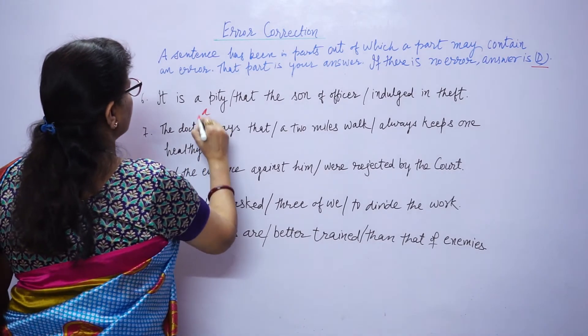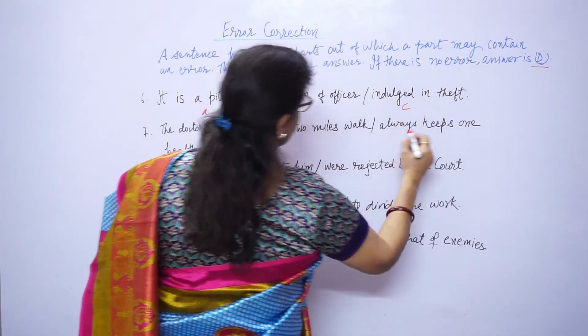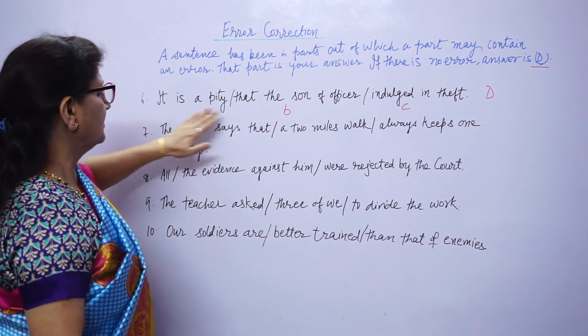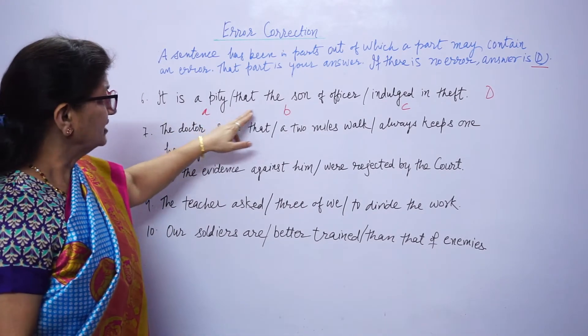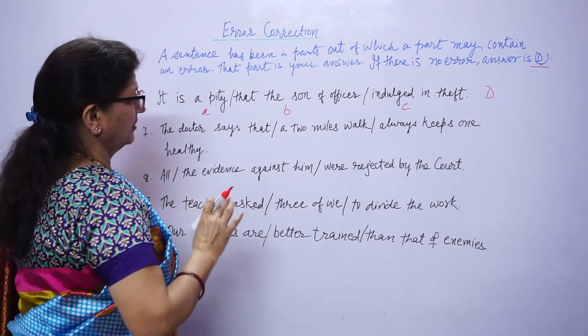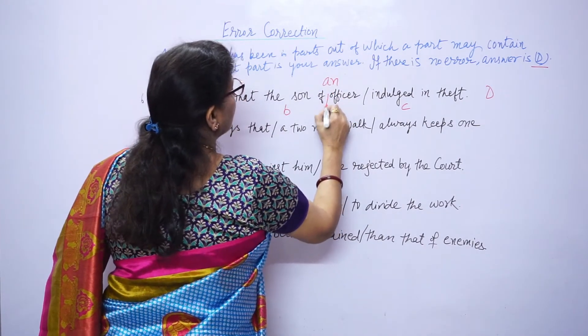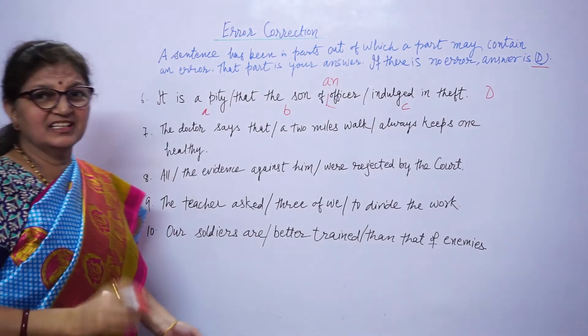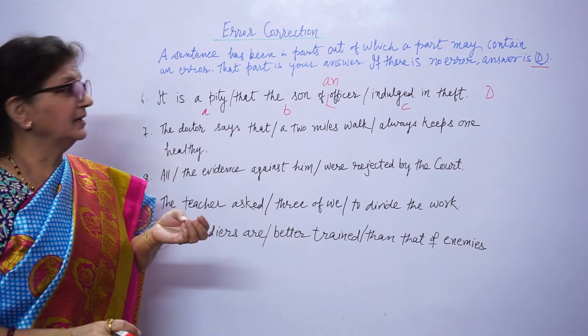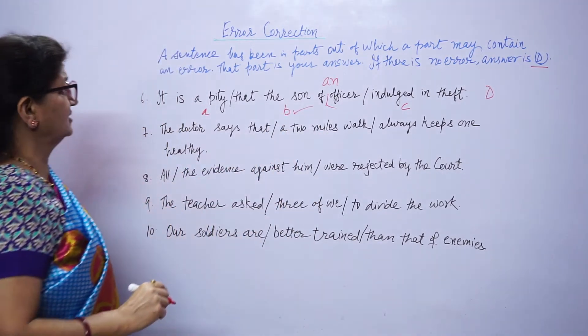Our next sentence is, it's a pity that the son of officer indulge in theft. It's a pity, correct. That the son of officer, indulge in theft, correct. Here, minor mistake is there, and that is an. Even if the mistake is minor, don't think in exam that it doesn't matter. You will be tested very minutely, so an officer should be there.